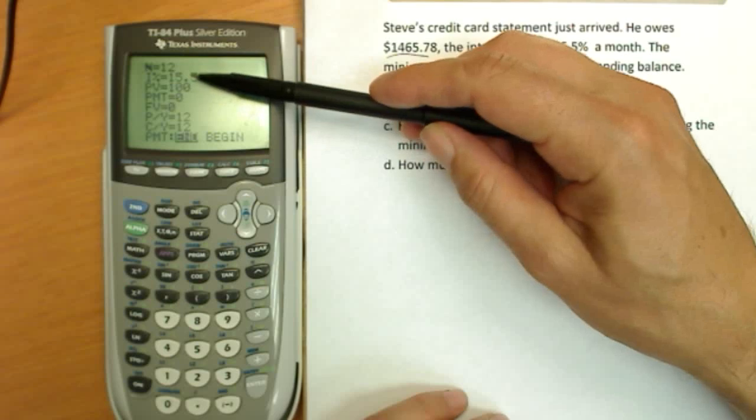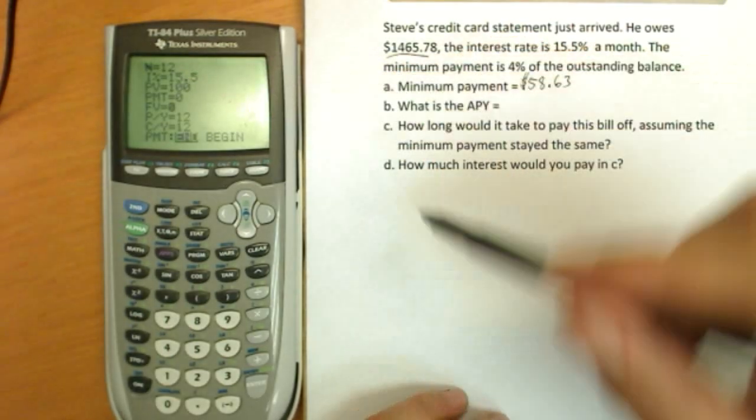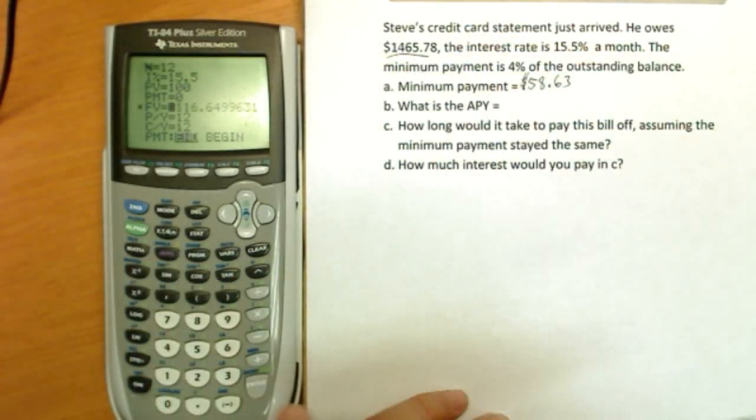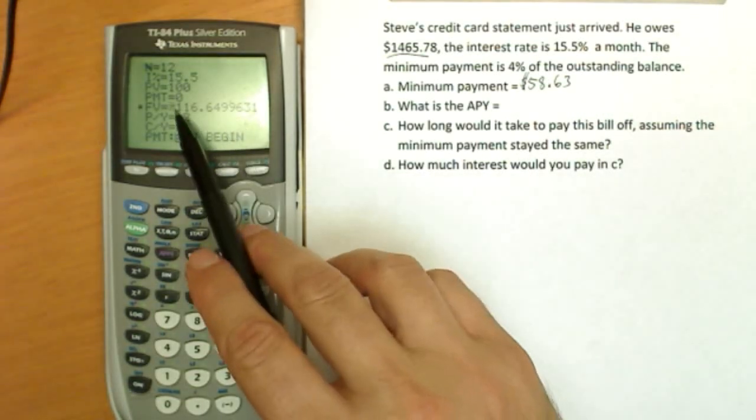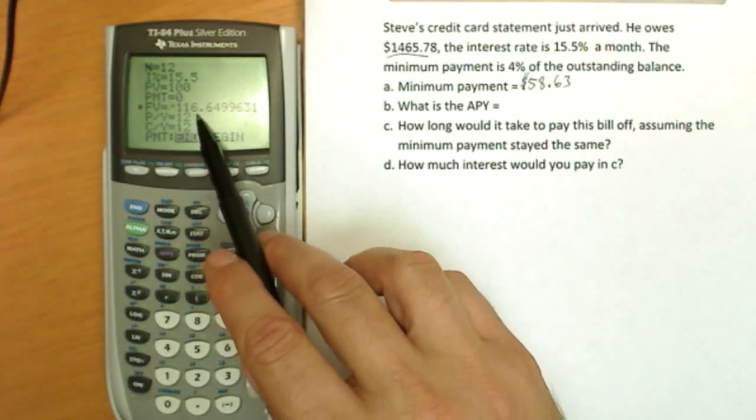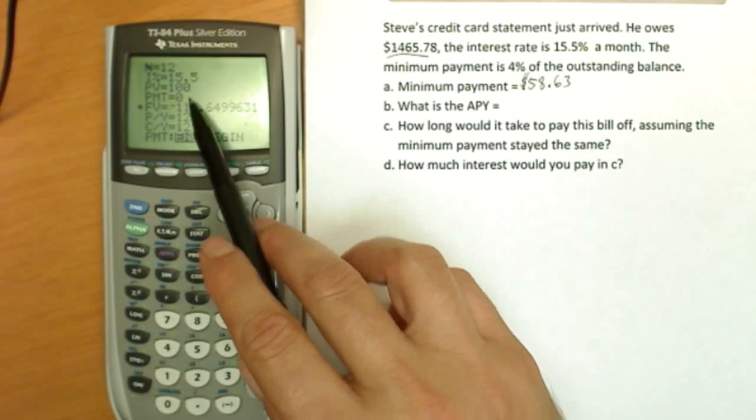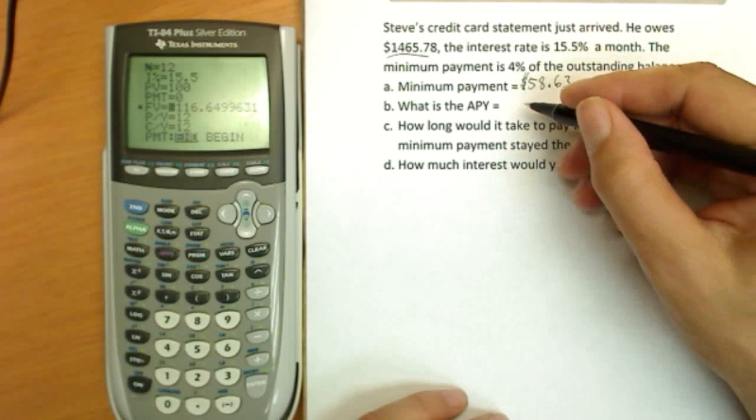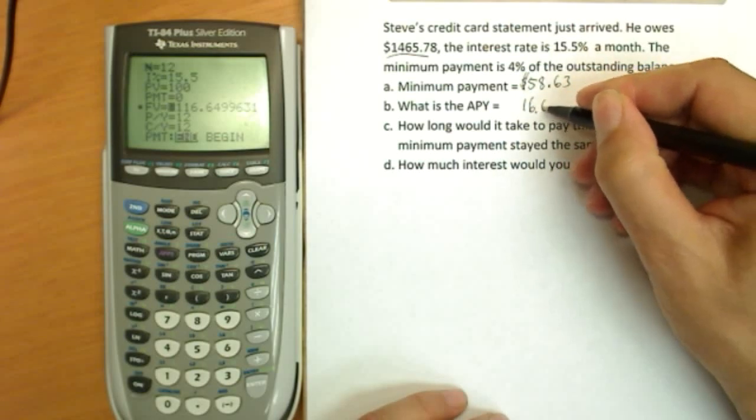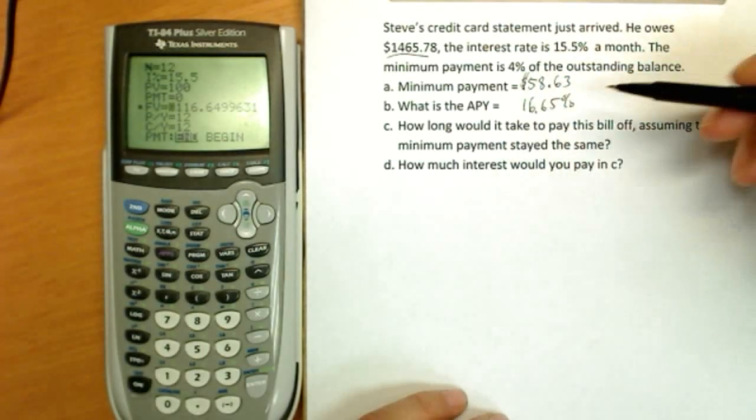We simply calculate the future value. We're just gonna see what happens with a balance using the interest rate and the compounding over one year time period. And we get $116.649. So if you started with $100 and it went up to $116.649, the increase is basically 16.65%.